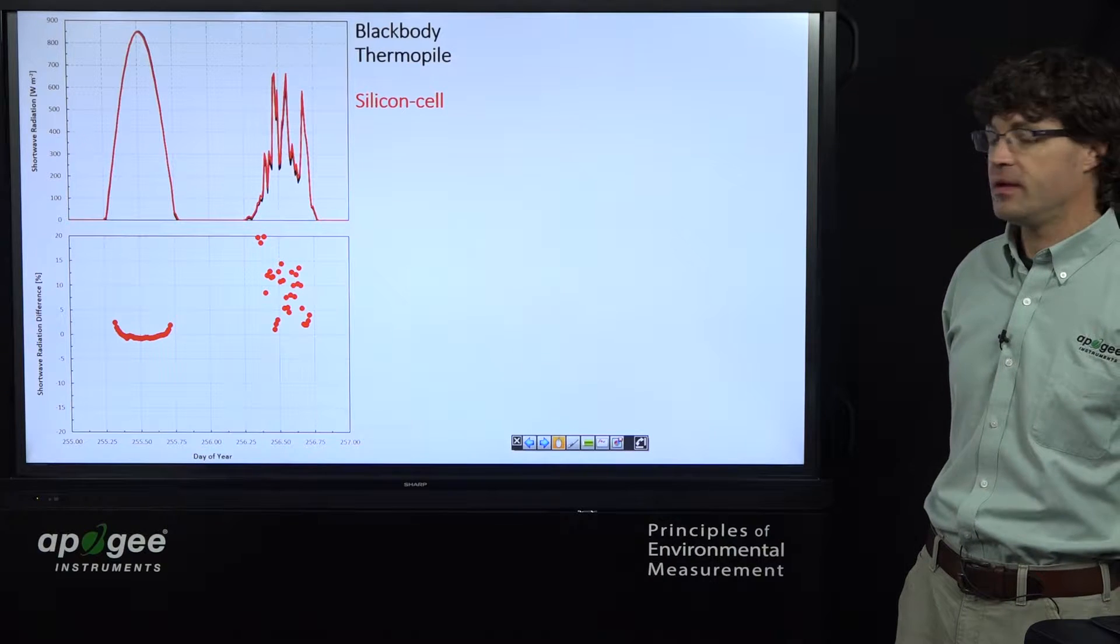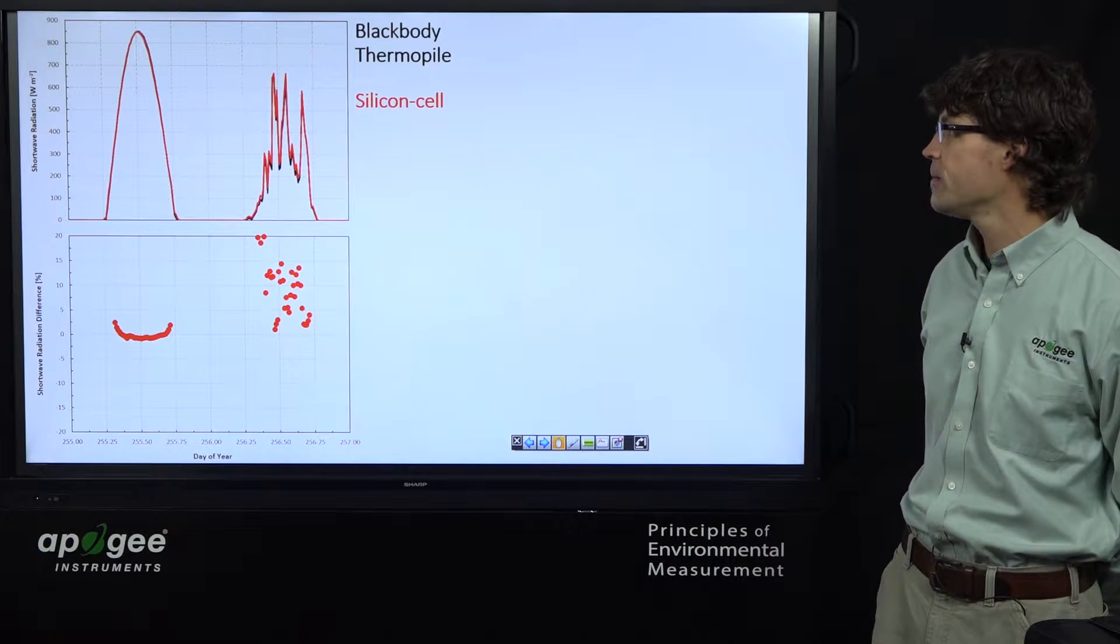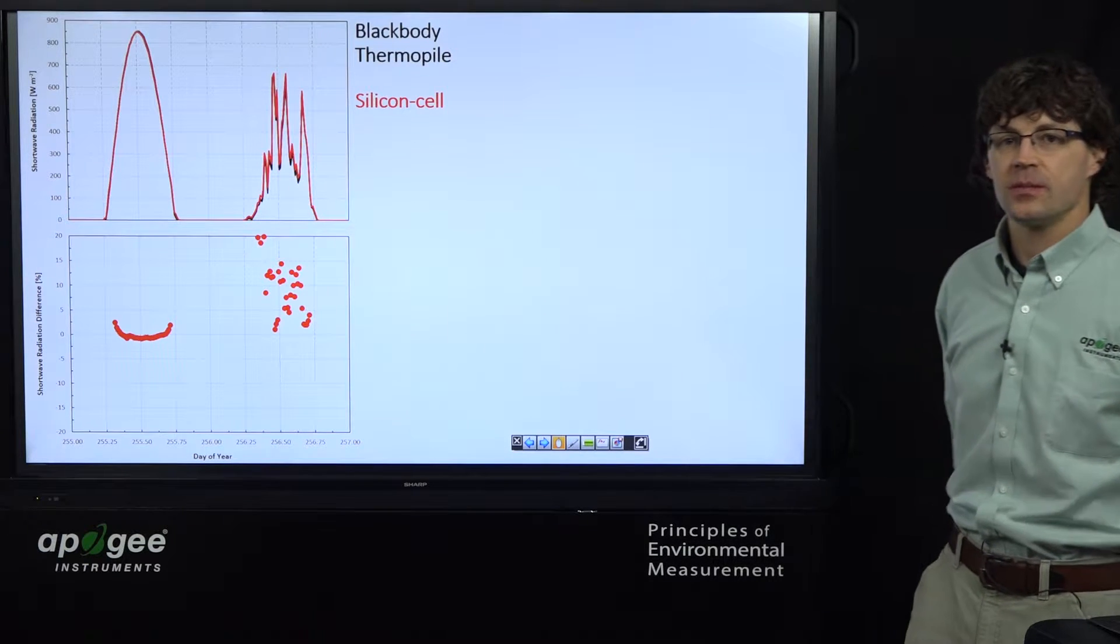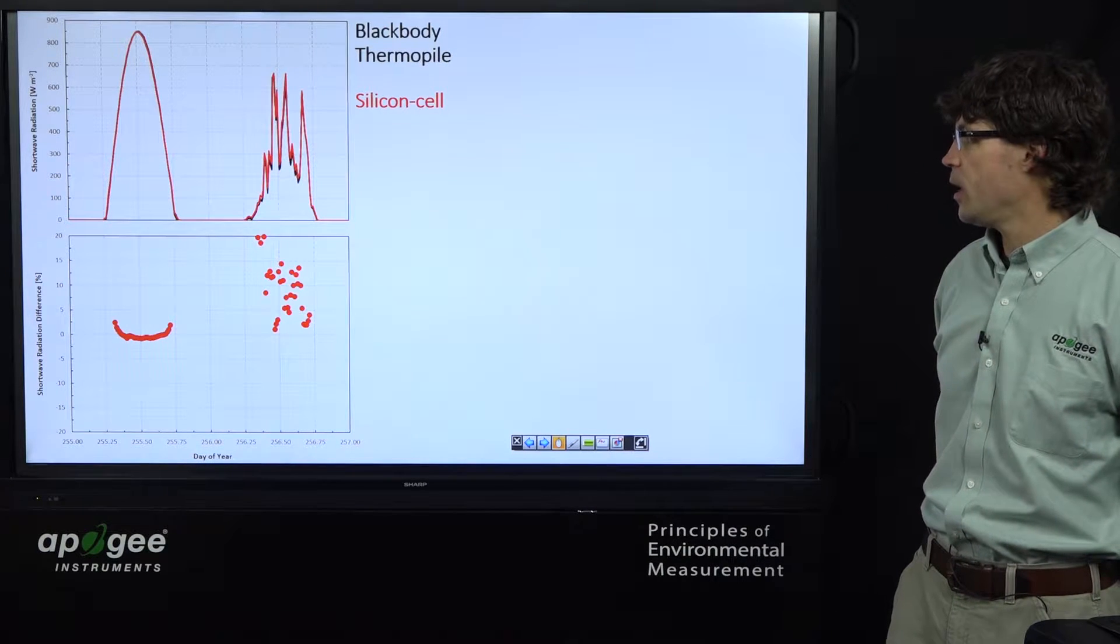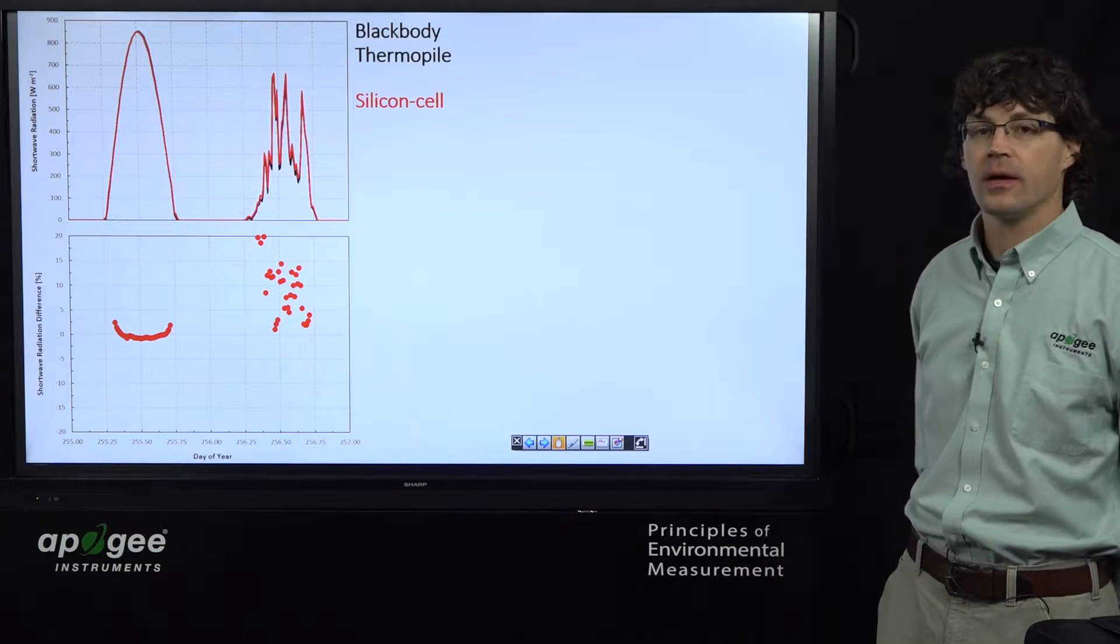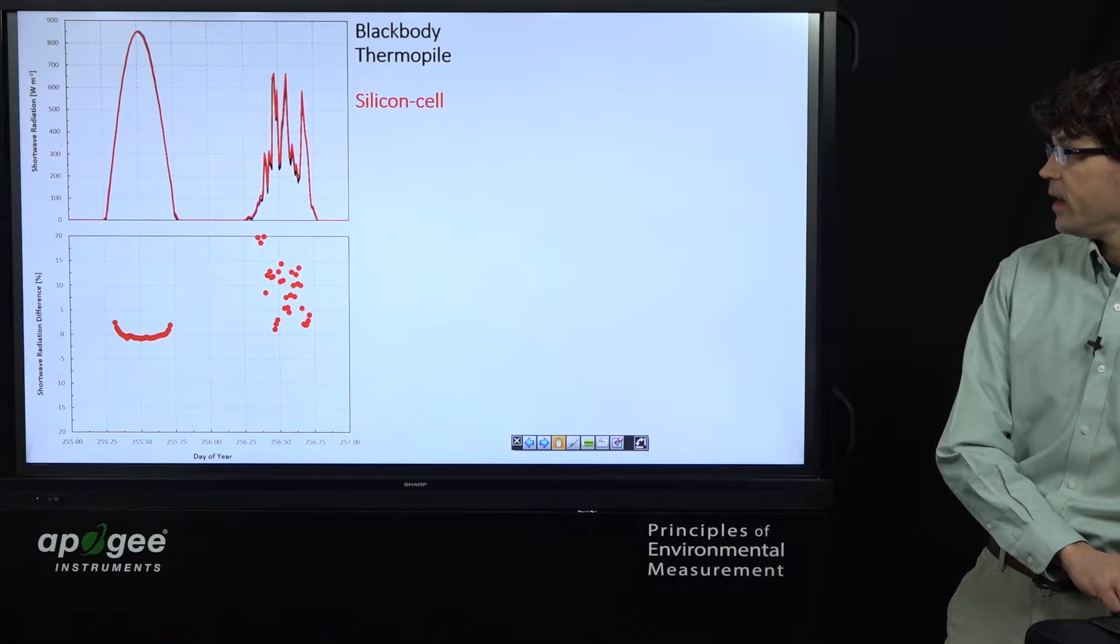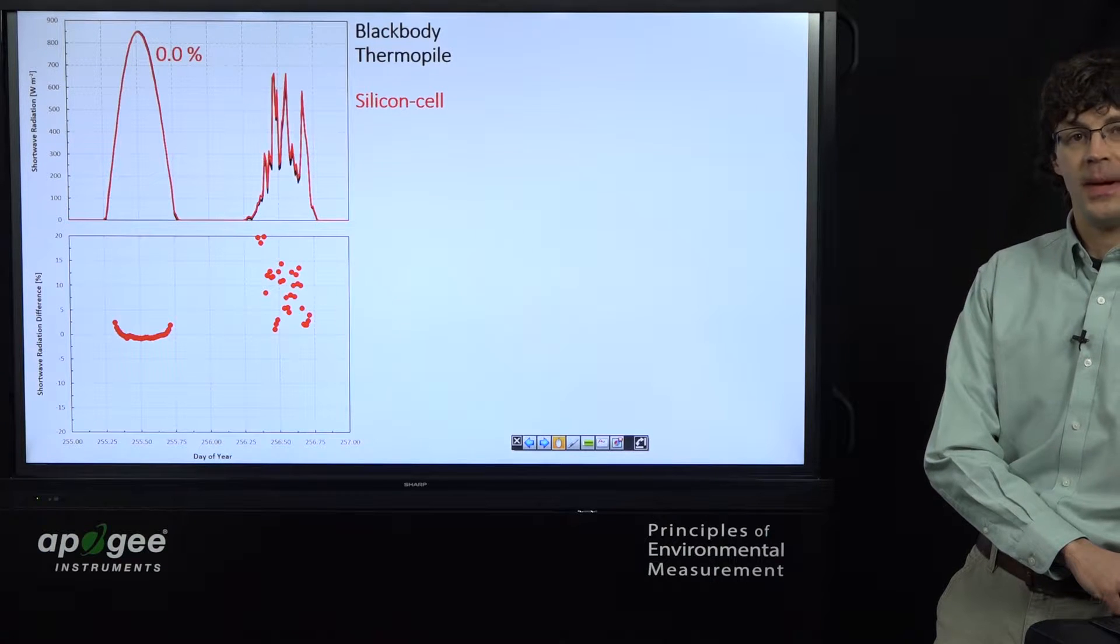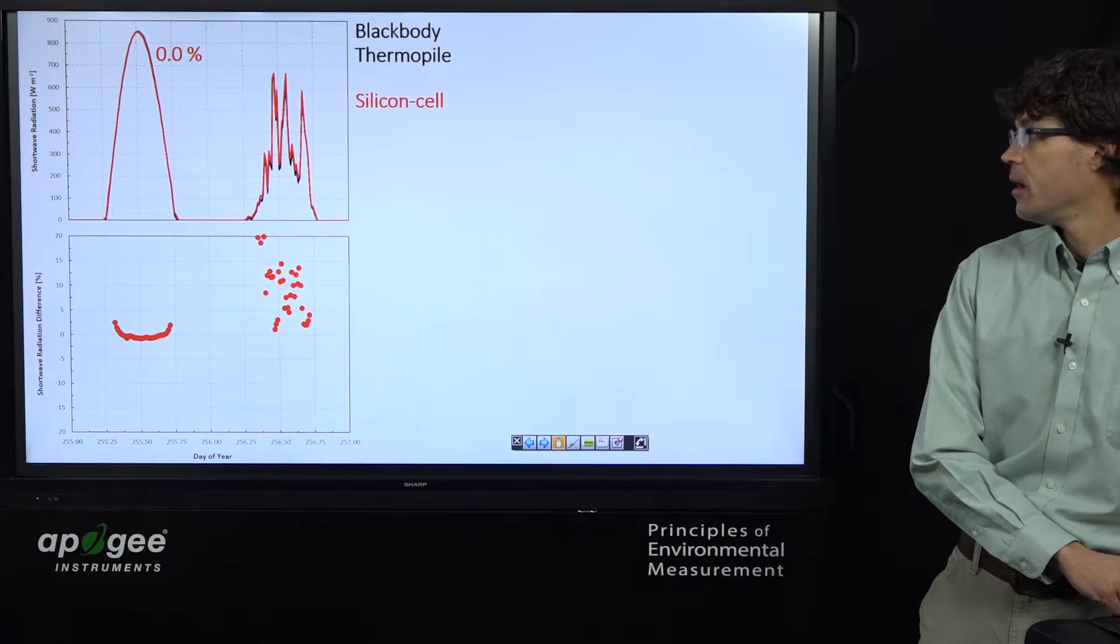So what this means in practice is shown in these data here. I just have two consecutive days from September of last year. The black plot, if you can see it underneath the red one there, are measurements from a secondary standard blackbody thermopile pyranometer on the rooftop of the Apogee building. Then the red plot is data from an Apogee SP110 silicon-cell pyranometer mounted next to the secondary standard, also on the rooftop of the Apogee building. So if we calculate the error on a daily total basis, the silicon-cell matched the secondary standard. No error on the clear sky day.